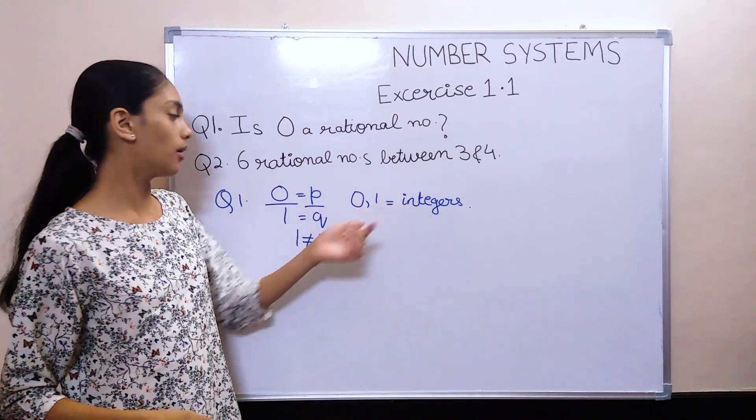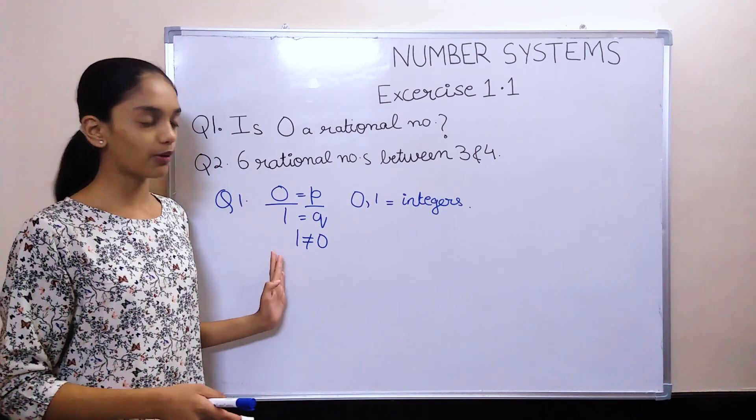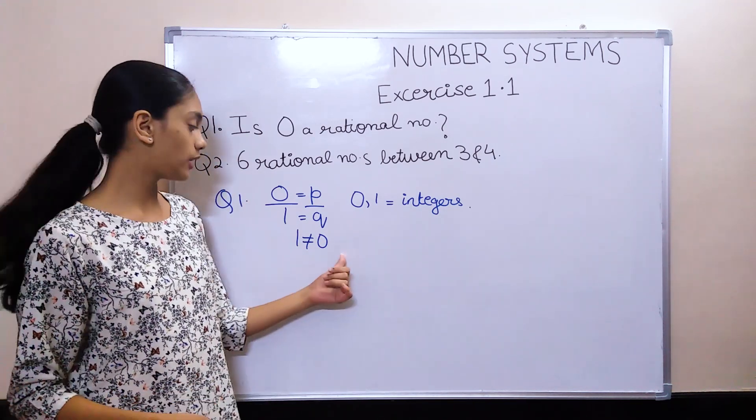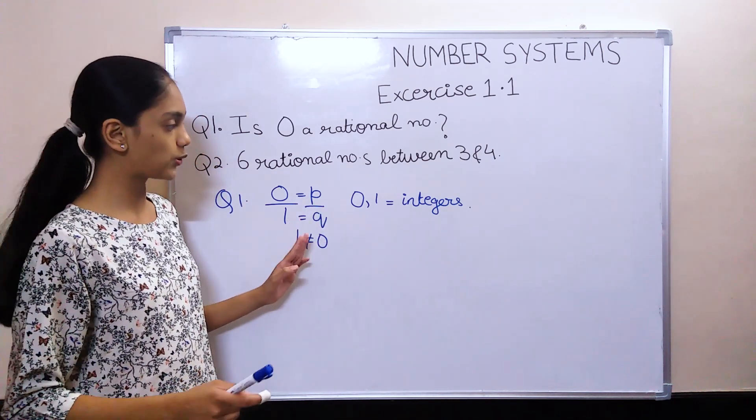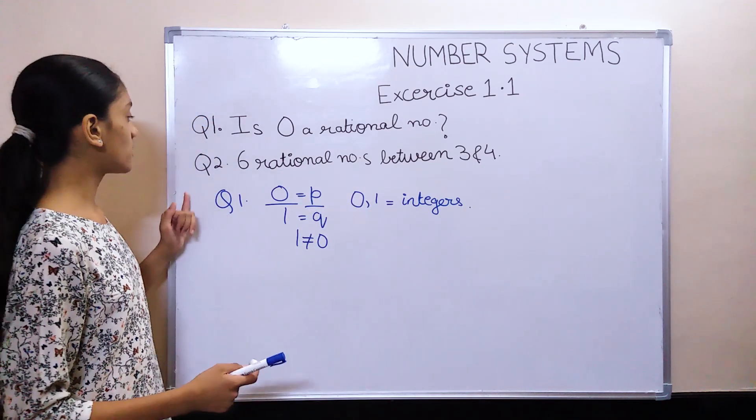Hence, 0 is a rational number because it can be written in the form of P by Q as 0 upon 1, where Q is not equal to 0, and 0 and 1 both are integers. Next question,